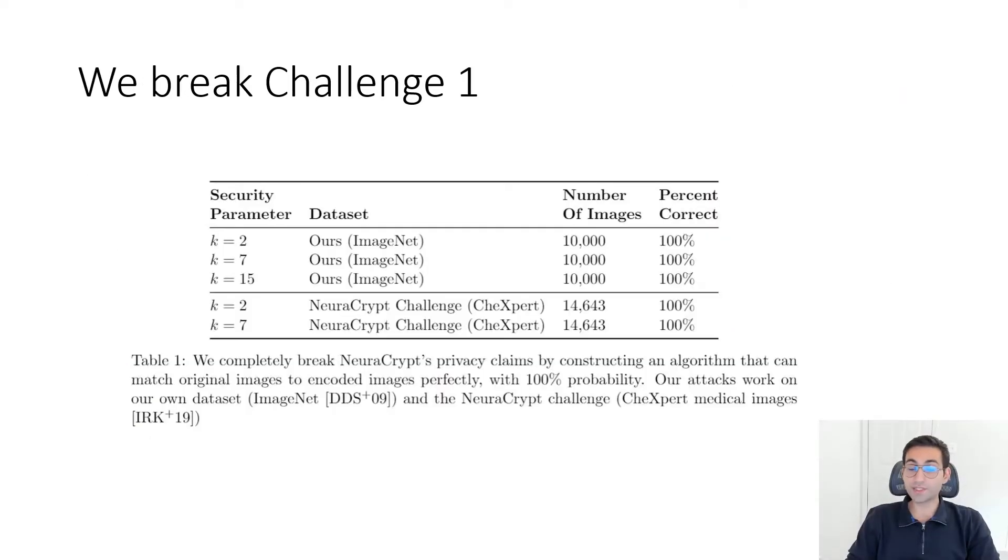In this work, we break challenge one. We design an attack that can solve the challenge one of NeuroCrypt. The bottom two rows in this figure are our results on NeuroCrypt challenge, which achieves 100% accuracy. We also instantiate new challenges on our own dataset, ImageNet in particular, and we change the security parameter to even beyond what they recommended. In all those settings, we still get 100% accuracy. This shows that it's not hard to solve challenge one for NeuroCrypt.